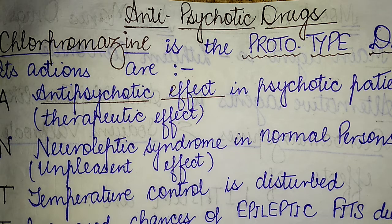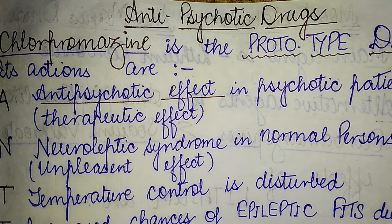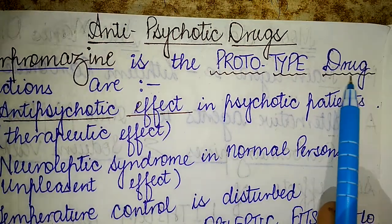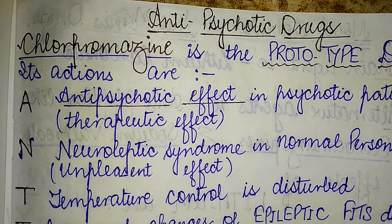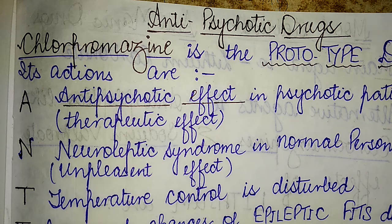Hello viewers, welcome to another session of my pharmacology series. Today I'll be discussing the anti-psychotic drugs and their actions. When talking of anti-psychotic drugs, we'll be looking at the entire characteristics, which can be well understood by examining the actions of the prototype drug. The prototype drug for this class is chlorpromazine.